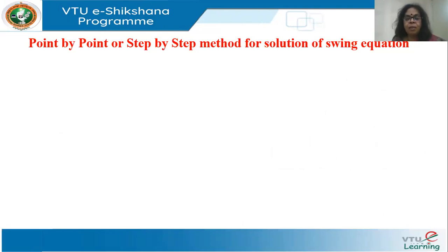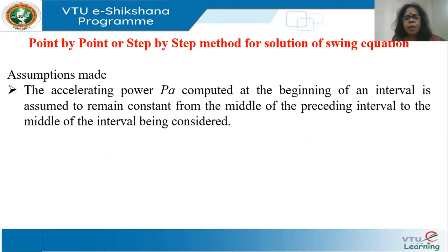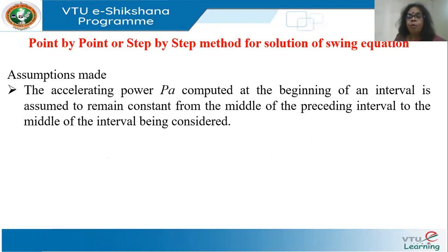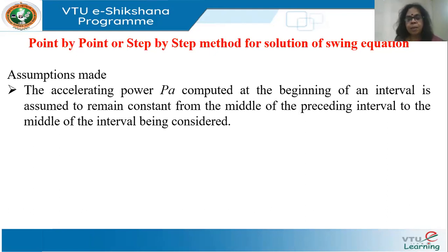Now we will see the step-by-step method for solving the swing equation. Every numerical method involves some approximation. A closed-form solution gives the mathematical expression for δ in terms of t; in the absence of that, we use numerical methods, which will always have some error. As long as the error is acceptable, the results are acceptable. The step-by-step method is also called the point-by-point method.